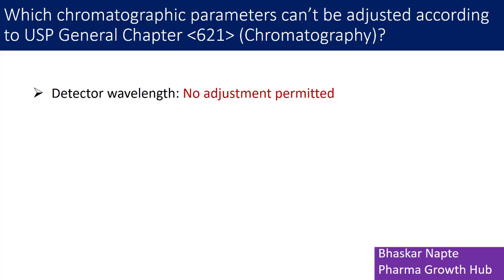The reason wavelength cannot be adjusted is that the detection wavelength defines the sensitivity of your method. It also helps in detecting the analyte — the drug substance in the case of assay, or related substances in the case of impurities. If you change the wavelength, some impurities may go missing and your response can get changed or altered. For that reason, USP General Chapter 621 does not allow adjustment of the detection wavelength.